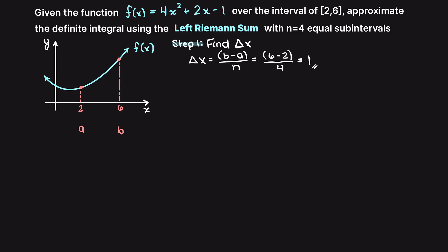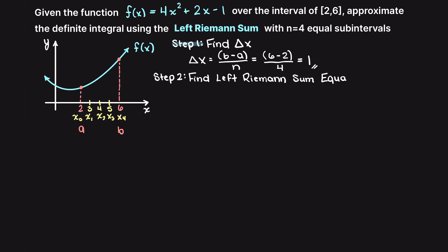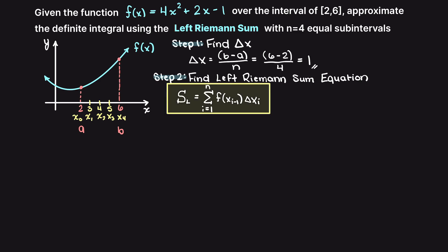So let's add these onto our graph here on the left. Secondly, we need to develop our left Riemann sum equation to solve this problem. To do this, we begin with our general formula that was developed in our past Riemann sum theory video, which I will leave a link in the description down below if you missed it. With equal subinterval spacing, our delta x becomes a constant, and we can factor it out in front of our summation term, therefore we get the following equation.